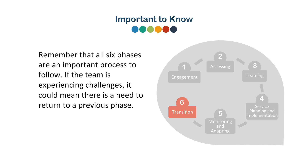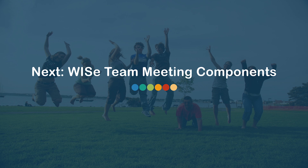Remember that all six phases are an important process to follow. If the team is experiencing challenges, it could mean there is a need to return to a previous phase. You have now completed WISE Module 4, Phases and Activities Part B. The next module is WISE Team Meeting Components.